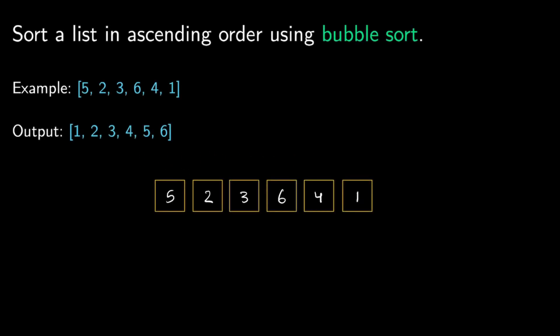Hey everyone, in this video we're going to learn how to sort a list using bubble sort. Bubble sort is a type of sorting algorithm. It's not very efficient compared to other algorithms like quicksort or mergesort, which are much faster, but bubble sort is a very simple, easy algorithm to learn. So that's what we're going to be exploring here.